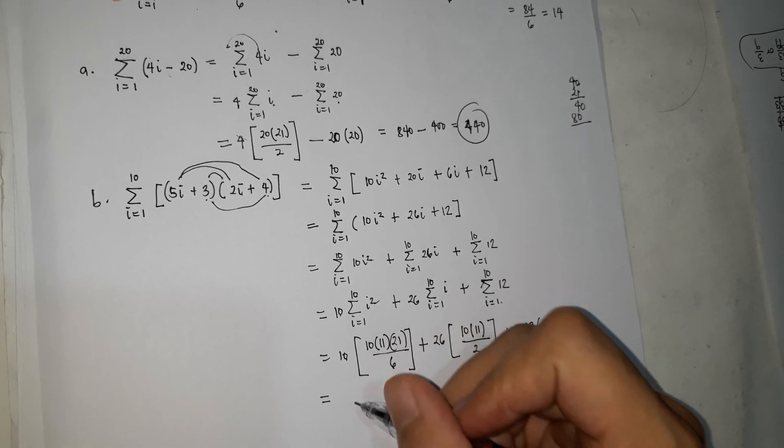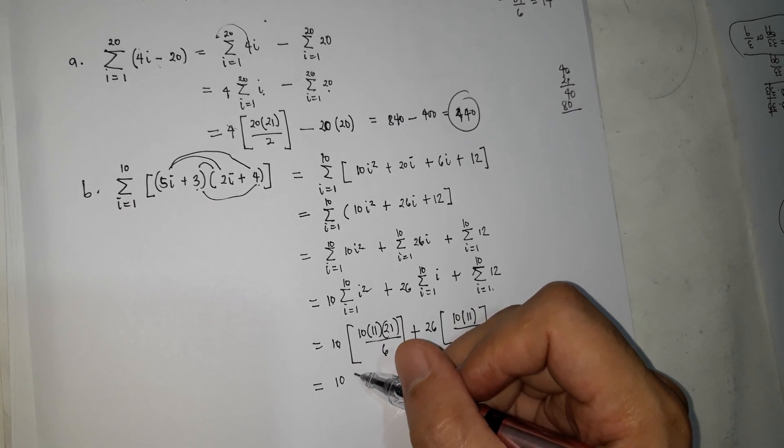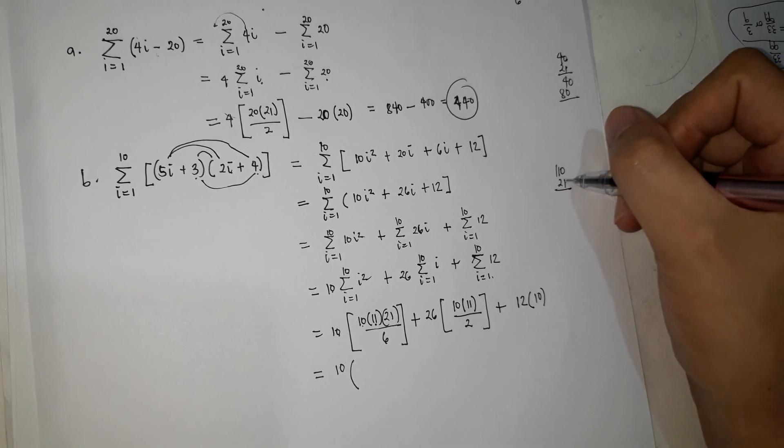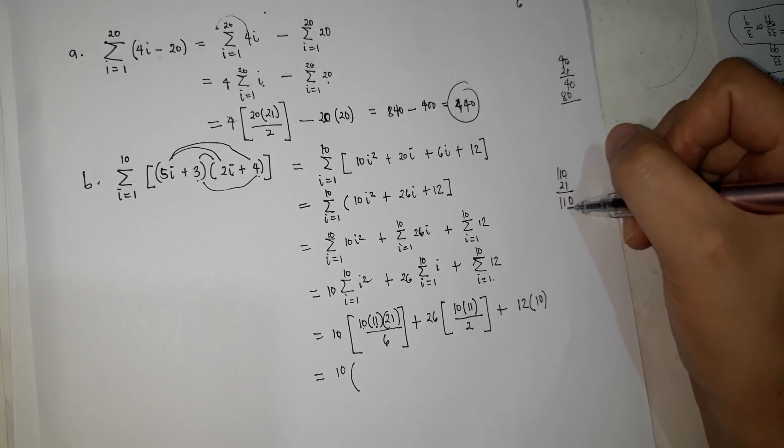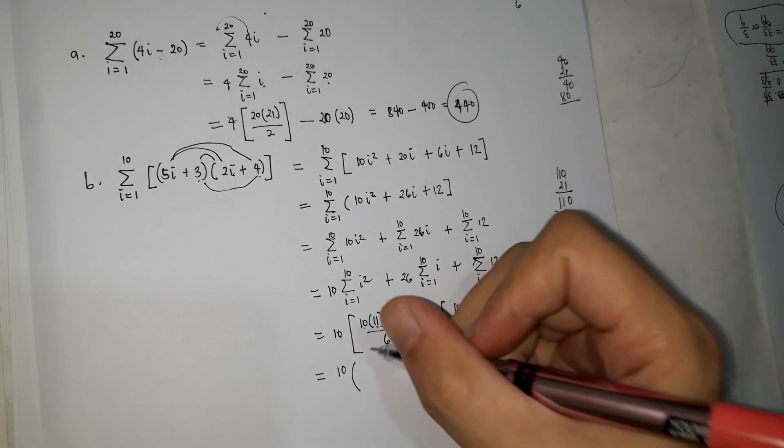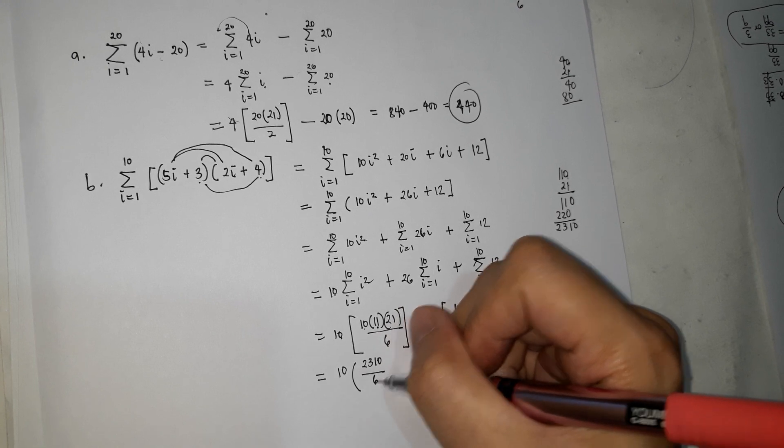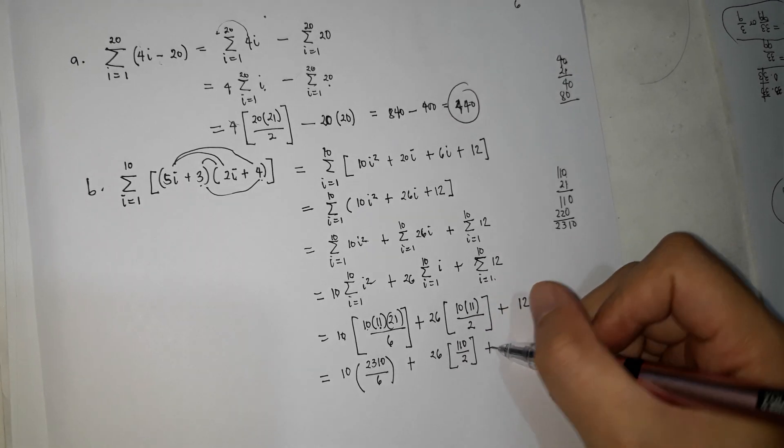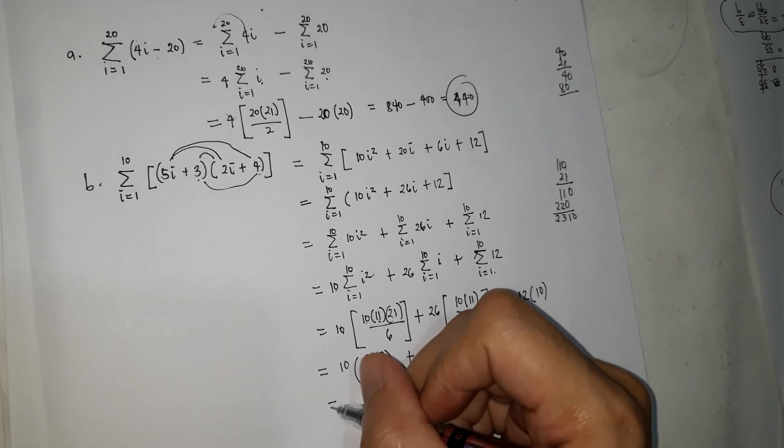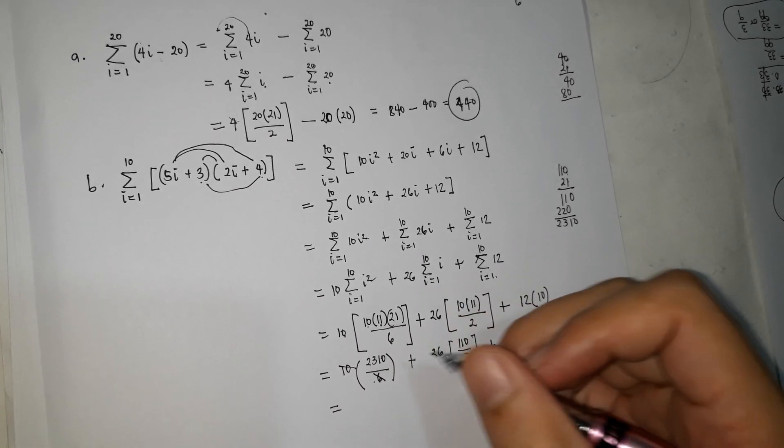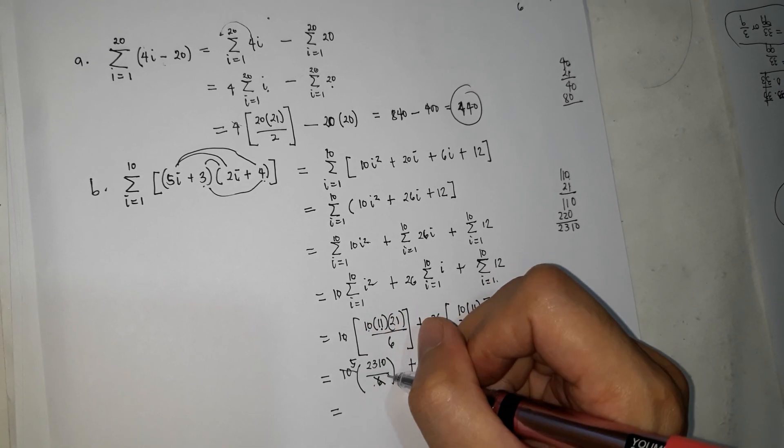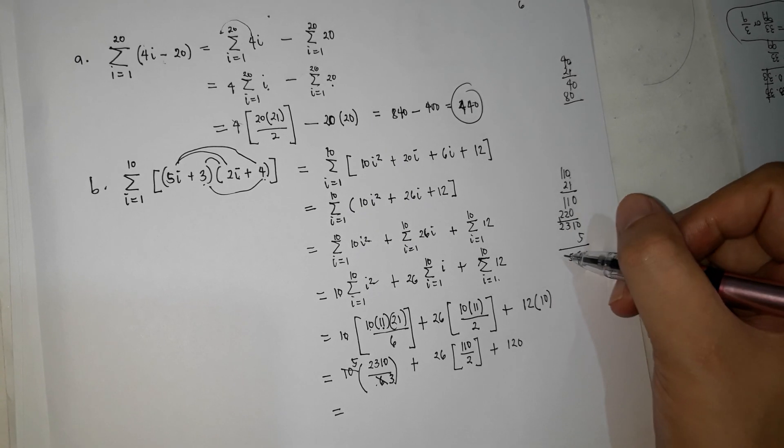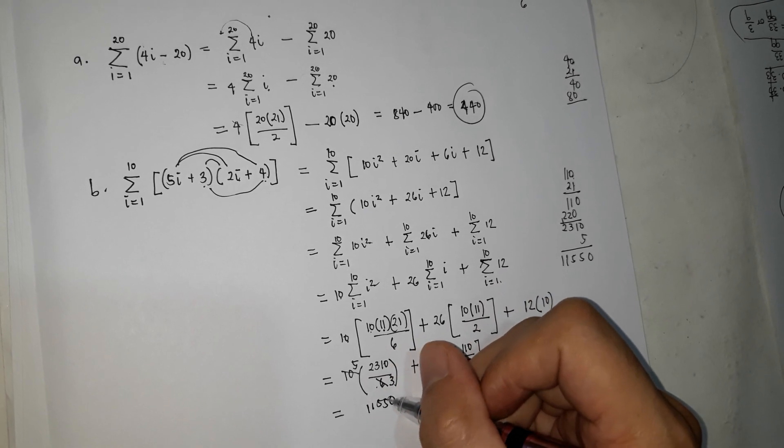So next, let's simplify. 10 times, 10 times 11, 110, 110 times 21, 0, 1, 1, 0, 2, 2. So 2, 3, 1, 0, 2, 3, 1, 0, over 6, plus 26, 110, over 2, plus 120. Pwede mo yung i-simplify para mas madali lang. So ito magiging, divide mo by 2, magiging 5, magiging 3. So ang 2310 times mo ng 5, 0, 5, 15, carry 1, 11, 1, 1, 5, 5, 0, over 3, plus,